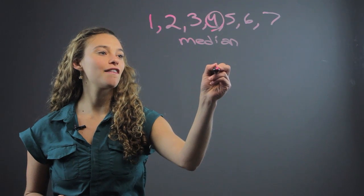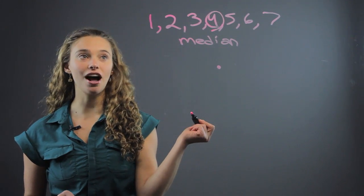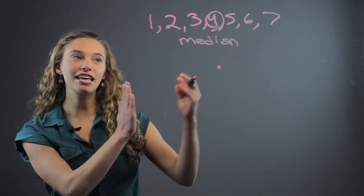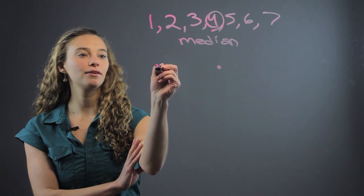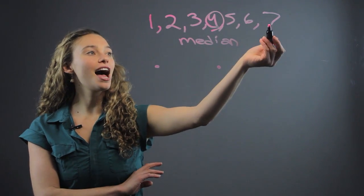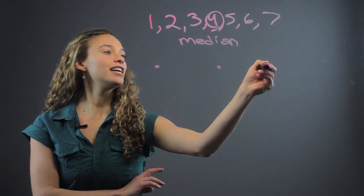So that is going to be at the center of the box and whisker plot. We're going to put a dot there. Then we're finding the range, the lowest number which is 1, and the highest number which in this case is 7.